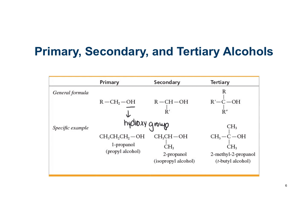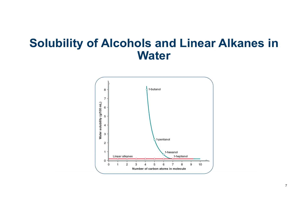Here are specific examples shown below. Depending on whether an alcohol is primary, secondary, or tertiary, that affects its chemistry. So you will need to be able to identify if an alcohol is primary, secondary, or tertiary.